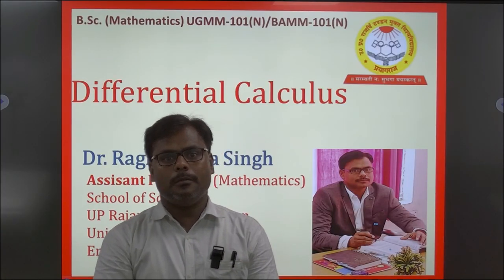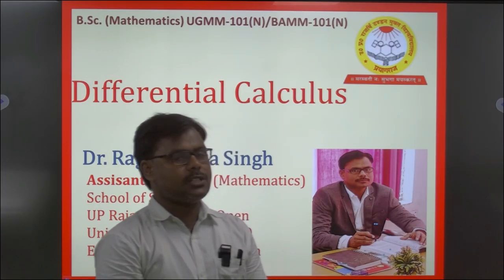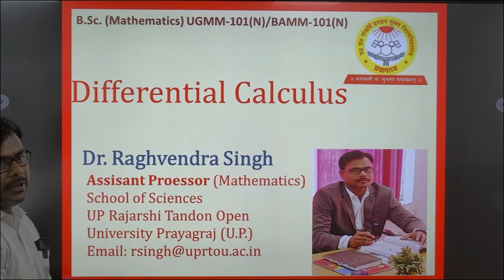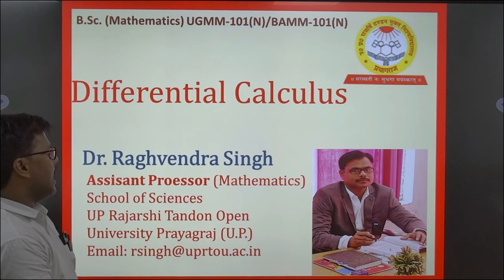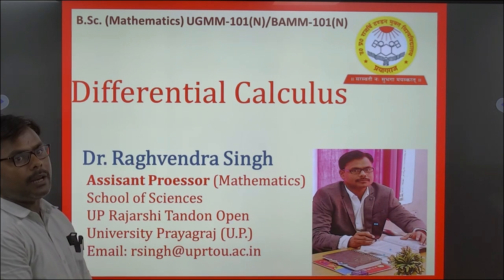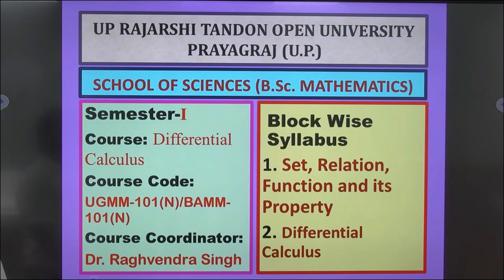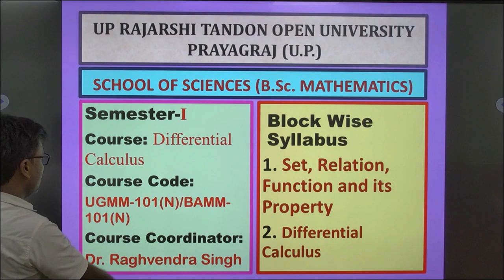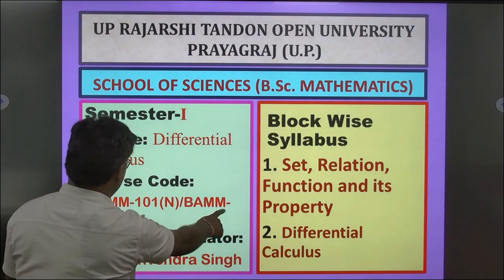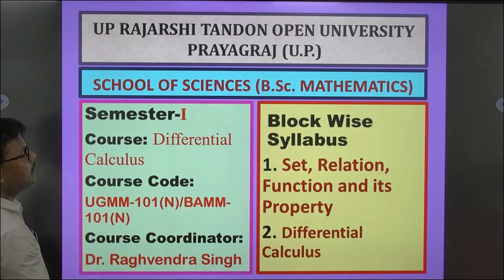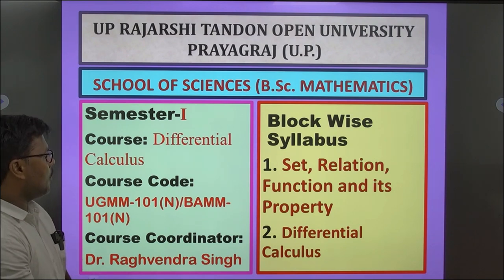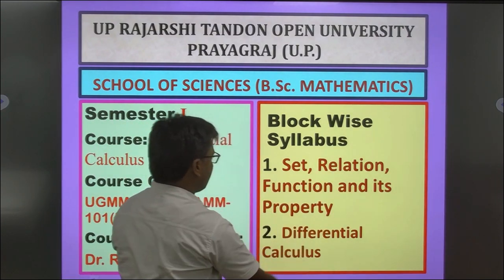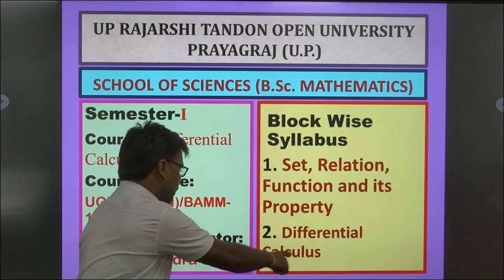Good morning. I am Dr. Raghun Singh, Assistant Professor, UPRT Prayagraj. Today I will discuss Differential Calculus for BSc First Year — the syllabus, paper, and topics. Our First Semester course is Differential Calculus. The course codes are UGMM 101N and BAMM 101N. It contains two blocks: Block 1 covers Relations, Functions and their Properties; Block 2 covers Differential Calculus.